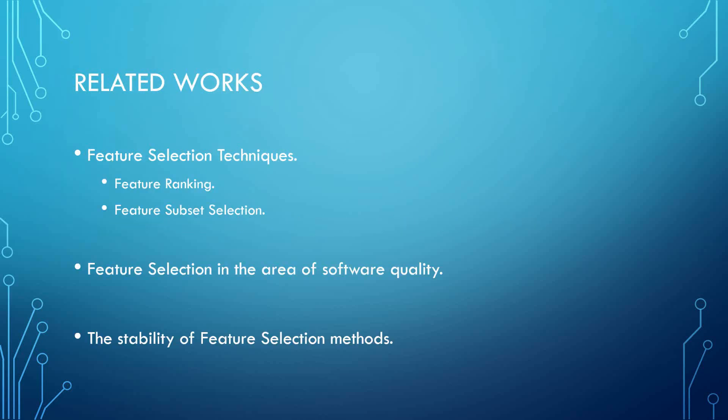The main goal of feature selection is to select a subset of features that excludes features which are not useful for predicting the class or that contain information already found in other features. Feature selection techniques can be classified as feature ranking or feature subset selection. Feature ranking sorts the attributes according to their individual predictive power, while feature subset selection finds the subset of attributes that collectively have good predictive power. Related works in software quality prediction and in the stability of feature selection methods will be covered.